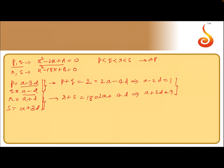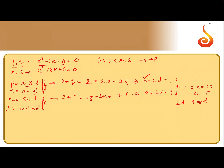Adding the two equations: 2a = 10, so a = 5. Since a = 5, we get 2d = 4, so d = 2.